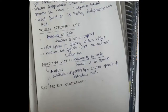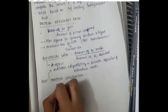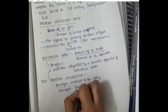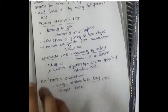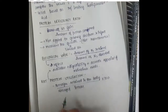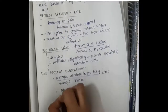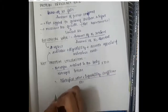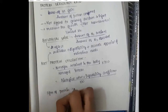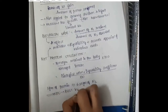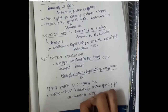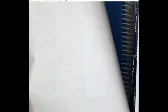Net protein utilization is the nitrogen retained in the body divided by nitrogen intake, multiplied by 100. It reflects availability, absorbability, digestibility, and accurate use of protein for maintenance needs. Net protein utilization equals biological value multiplied by digestibility coefficient, divided by 100. One gram of protein gives approximately 6.25 grams of nitrogen. Net protein utilization is the best indicator for protein quality for recommended dietary intake.